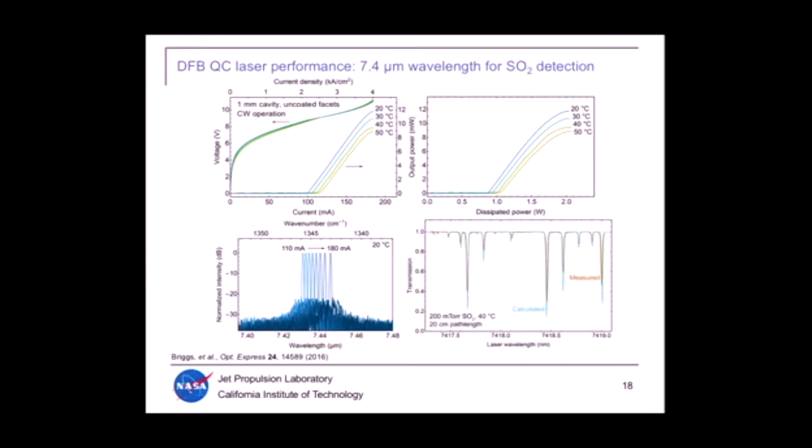We've achieved similar results at 7.4 microns. The voltage is a little bit lower because the energy drop per stage is lower with the longer wavelength but the threshold current is a bit higher. We still get threshold power consumption around one watt and above room temperature emission. We have nice single mode tuning and this is actually a transmission spectrum where we've shined one of our lasers through low pressure SO2 gas with a 20 centimeter path length and comparing the measured transmission to transmission calculated from the HITRAN molecular absorption database, the standard database for these things, and we've got good agreement.